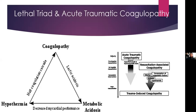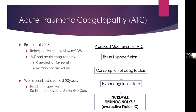Acute traumatic coagulopathy started being recognized around 20 years ago. The first study mentioning it was by Brohi et al. — a retrospective chart review in trauma patients. They had 1,088 patients and noticed 24% had an acute coagulopathy. When they correlated this to the fluid volume received, they found no relation whatsoever — it was only related to injury severity. Since then, a very good review article by Kushimoto et al. in 2017 in the Journal of Intensive Care outlined the proposed mechanism.